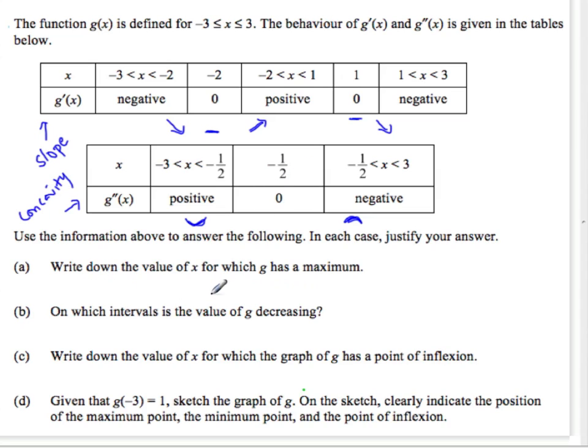Okay. So, let's answer some questions. Write down the value of x for which g has a maximum. Well, it's either got to be negative 2 or 1, because those are the only two times that the slope is 0. And the slope at a maximum is 0. So, it goes from going up to down, which would mean you can see it sort of happening here that that's a maximum. So, that's at x equals 1.